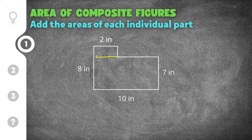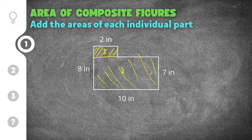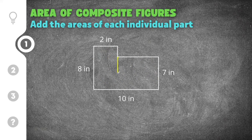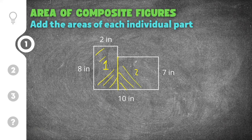You might draw a line here and have a first rectangle and a second rectangle, and find the area of each and add them together. Or you could draw the line in a different spot and still get two rectangles — find the area of one and add it to the area of the other. The sum of those two areas will be the area of the whole composite figure.